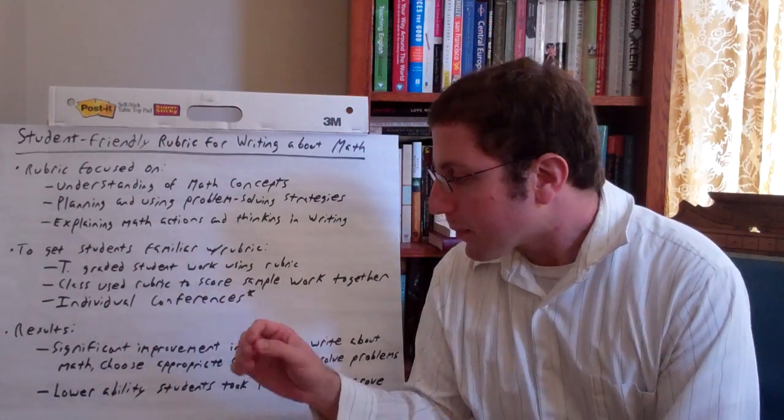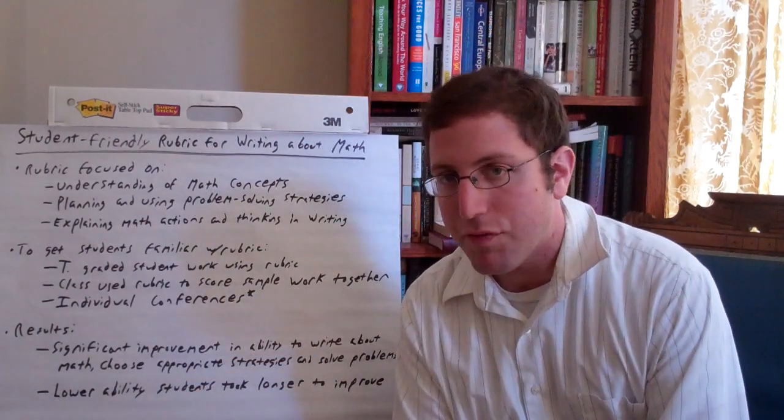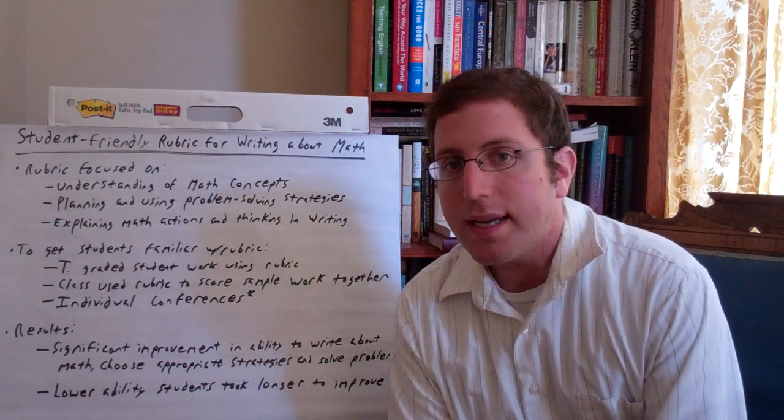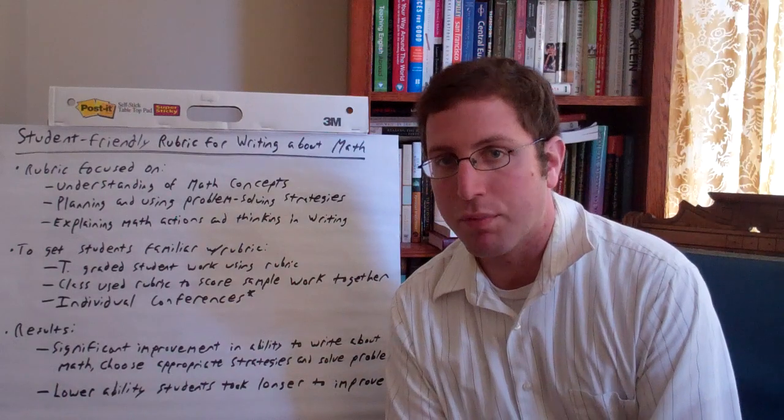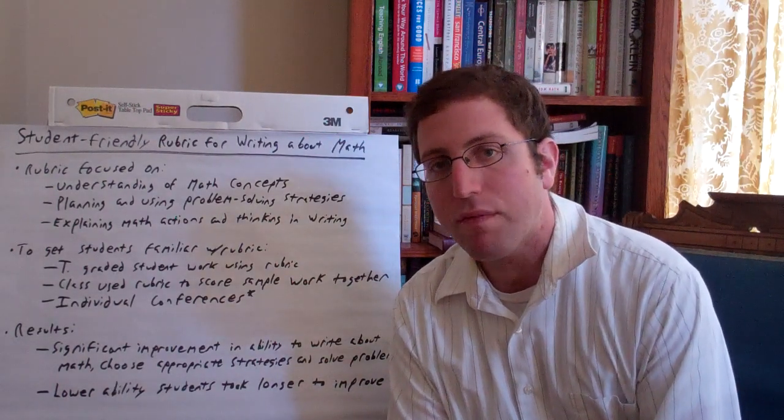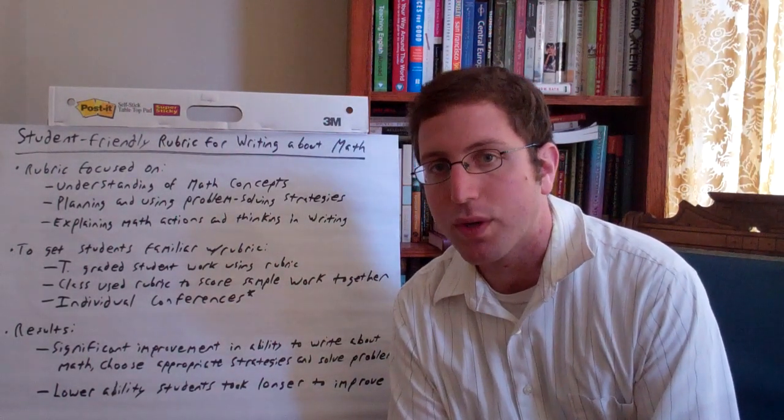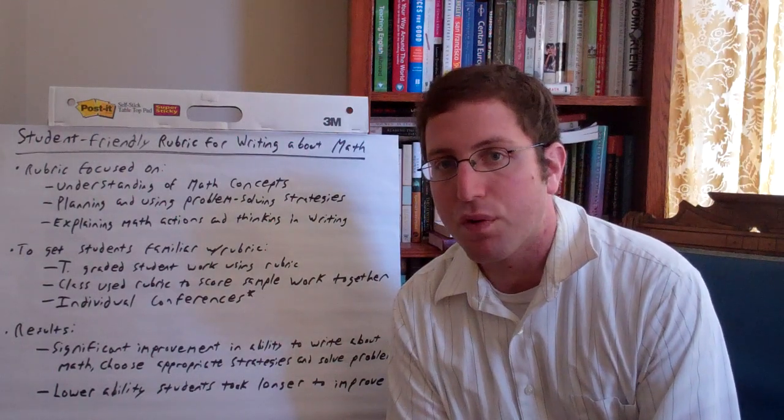What she did find was that lower-ability students, both the average and below-average student, they needed longer to really get familiar with the rubric and to really start showing improvement in their work. In the case of the below-average student, it took all five weeks to really see some significant improvement.